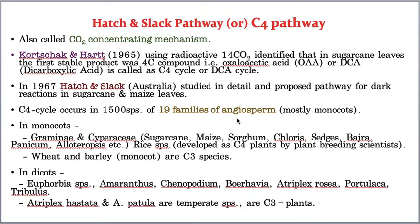Rice was originally a C3 plant but has been converted into C4 by plant breeders. Wheat and barley, though monocots, still show only C3 or the Calvin pathway instead of the C4 pathway.